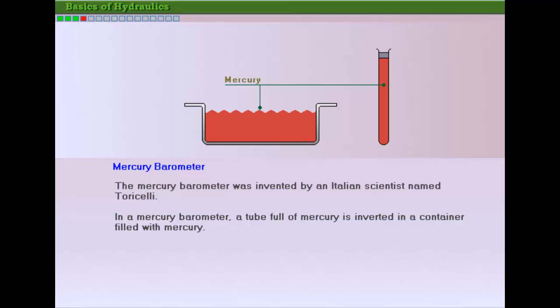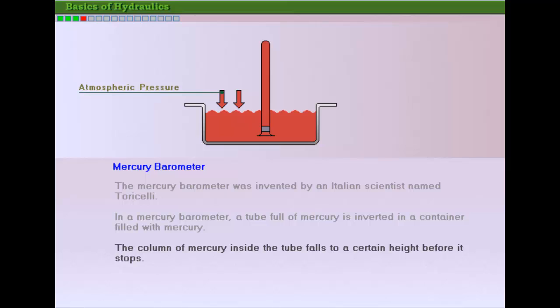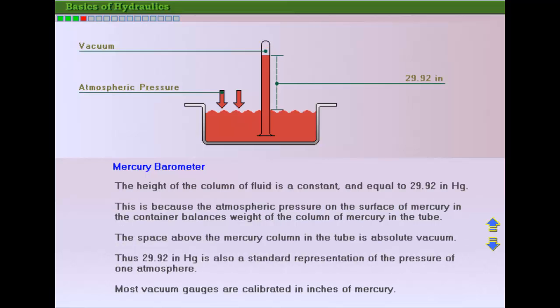A tube of mercury is inverted in a container filled with mercury. The column of mercury inside the tube falls only to a certain height before it stops. The height of this column of mercury is always the same with an atmospheric pressure of 14.7 psia, and is equal to 29.92 inches of mercury.